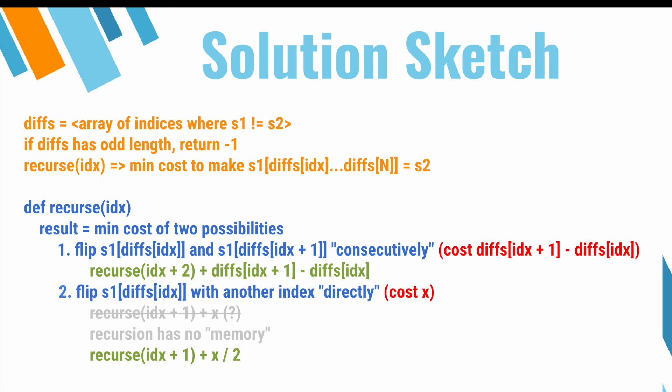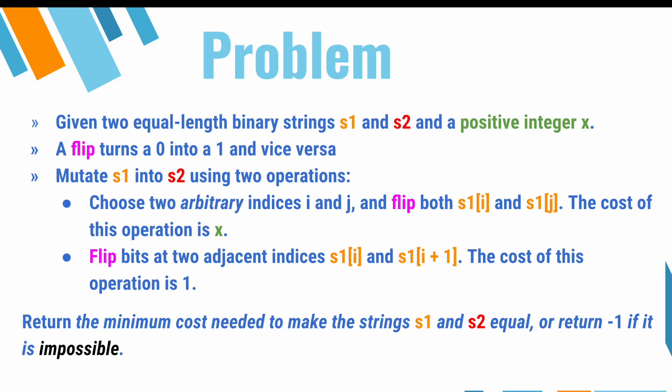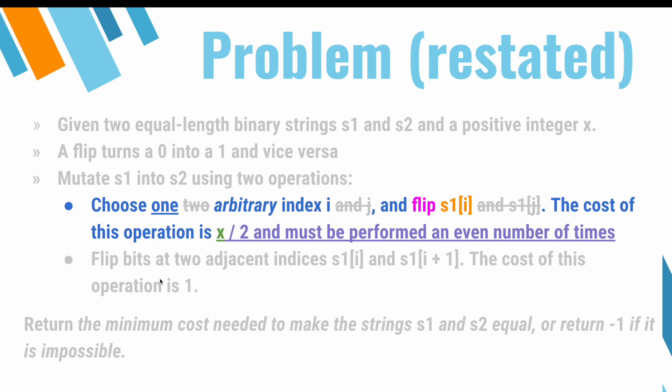This might be pretty confusing with the way the problem is currently phrased, so let's rephrase the problem. Recall that earlier we said that if there are an odd number of differing indices, we can immediately return -1 because it's impossible to solve. So in this recurrence relation, we are solving for the cost to make s1[diffs[i]] to s1[diffs[n]] into s2, where diffs has an even length. Here's the original. As a result of that conclusion, we can actually modify the first operation to be the following: instead of saying we choose two arbitrary indices and flip them with cost x, let's say that we can choose any arbitrary index i and flip that one index with cost x divided by 2, with the caveat that this operation must be performed an even number of times. Pause the video here and verify that the restatement makes sense to you.